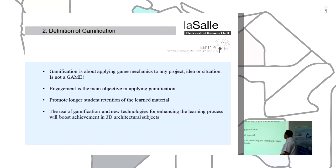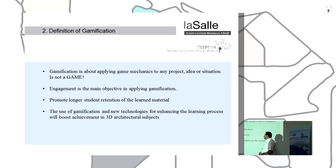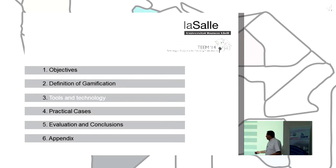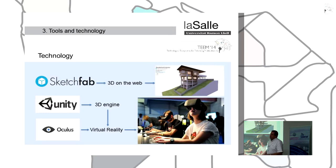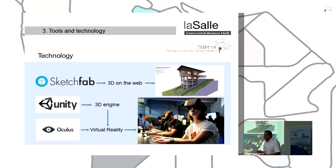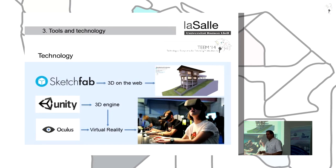Of course, the aim is to promote better student retention of information on the subject. The use of communication technologies for enhancing the learning process will help change 3D architectural subjects. In the first course, you can make a little gamification using augmented reality, but in the second course, students need to improve their comprehension of 3D space.